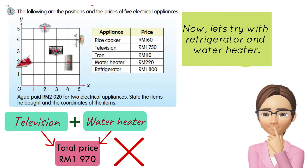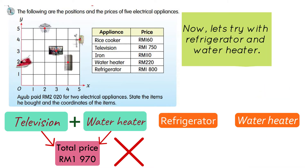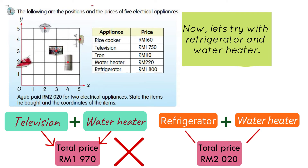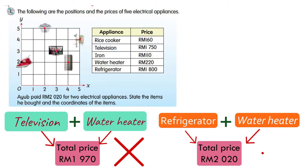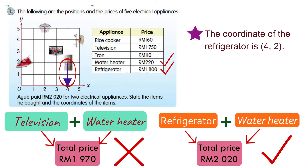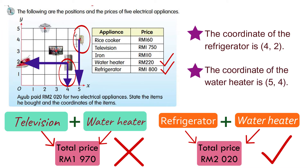Now let's try refrigerator and water heater: 1800 plus 220 — when you total up the price of these two items, we get 2020 ringgit. That means Ayub bought a refrigerator and a water heater. The coordinate of the refrigerator is (4, 2) and the coordinate of the water heater is (5, 4).